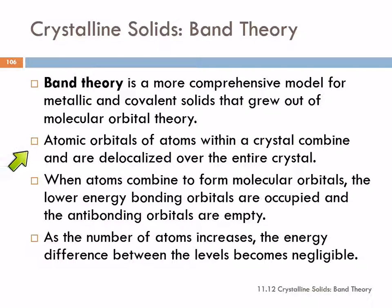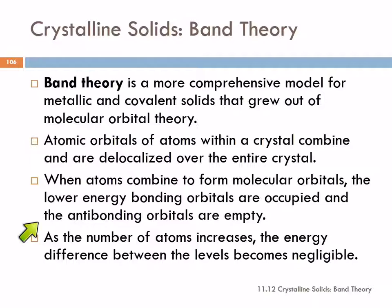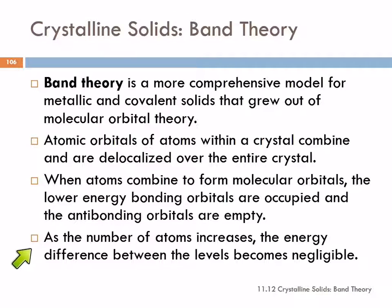In metallic and covalent solids, the atomic orbitals of the atoms are combined and delocalized over the entire crystal. When the atoms combine and form these molecular orbitals, there are lower-energy bonding orbitals and higher-energy anti-bonding orbitals. The lower-energy bonding orbitals are occupied; the anti-bonding orbitals are empty. As the number of atoms increases, the energy difference between the levels becomes negligible.